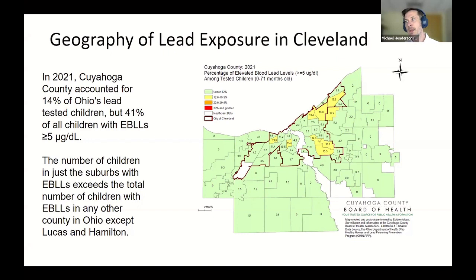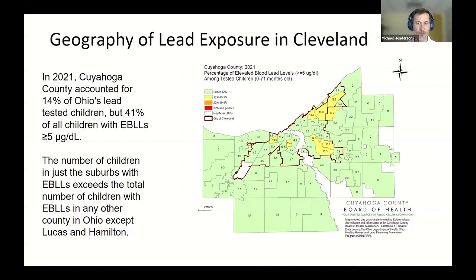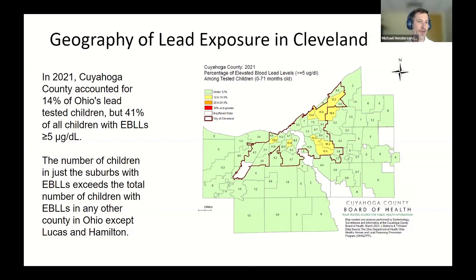Being exposed to lead, especially as a young child, is well known to have long-term deleterious consequences, including cognitive deficits and behavioral and social problems that can be persistent not just through childhood but throughout life. Ohio already has higher than average rates of lead poisoning in their child population. Cuyahoga County and its city center of Cleveland is the epicenter of the lead poisoning problem in Ohio. In 2021, 14% of all children under age 6 tested in Ohio were from Cuyahoga County, but those children accounted for 41% of all cases of elevated blood lead level results.